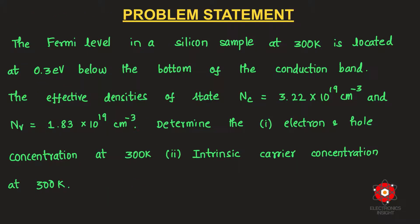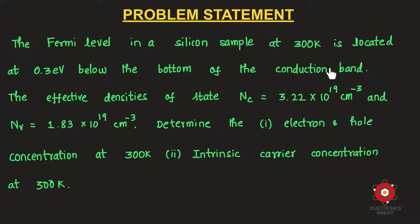We now move to the second problem involving the Fermi level. The Fermi level position is an indication of carrier concentration in a semiconductor. Here, the Fermi level in a silicon sample at 300 K is located 0.3 eV below the bottom of the conduction band.